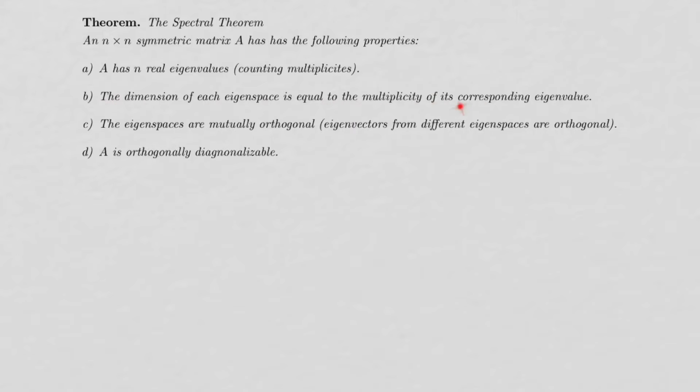And B is really great, though it may not be obvious what it means. The dimension of the eigenspace is equal to the multiplicity of the corresponding eigenvalue. What that means is, even if we don't get distinct eigenvalues, we will be able to get a set of n orthogonal eigenvectors.